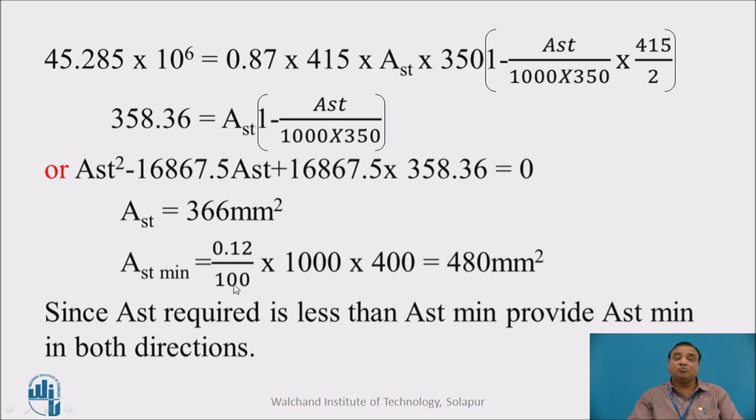AST minimum is 0.12 percent because it is a cantilever slab. This is 0.12 by 100 into 1000 into 400, which is 480 mm square. Minimum steel can be placed on both sides or on one side of the base slab. Since AST required is less than AST minimum (366 mm square versus 480 mm square), provide AST minimum in both directions.